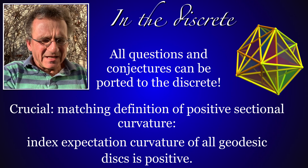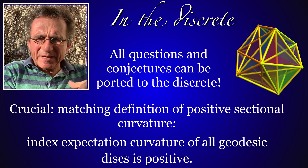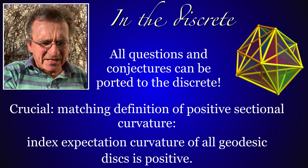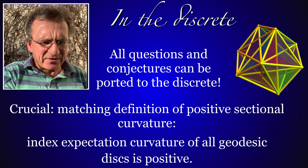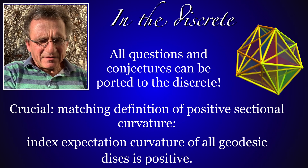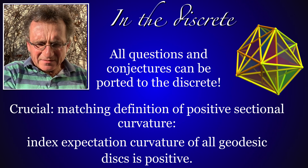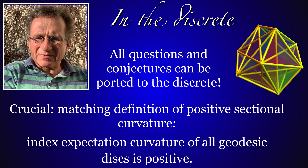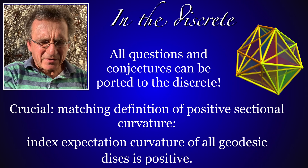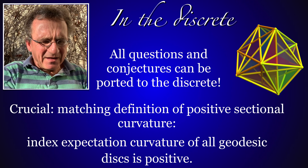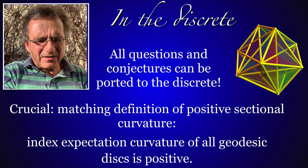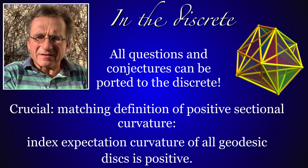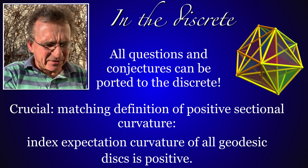There are only finitely many two-dimensional sections where one has to check for positive curvature. One can assume that the measure produces positive curvature and then see whether there is maybe a counterexample.